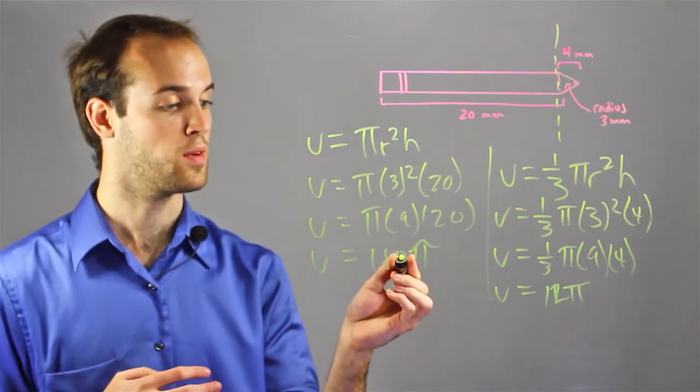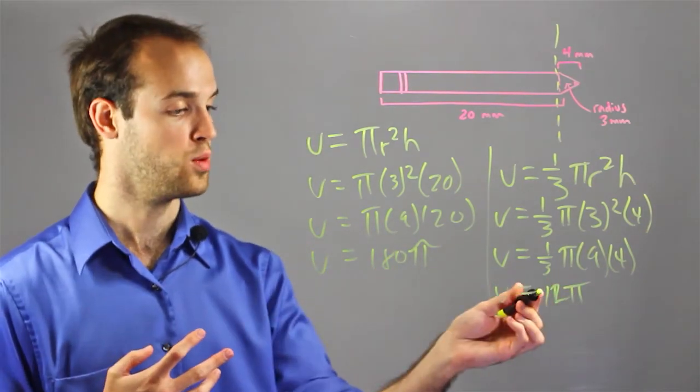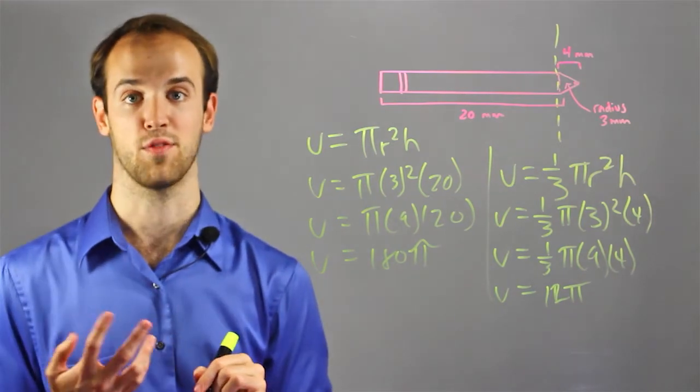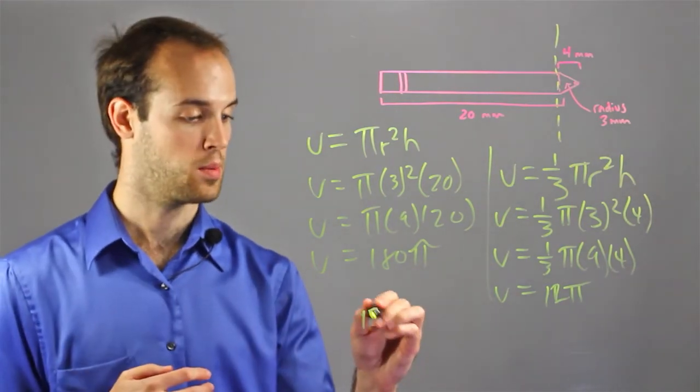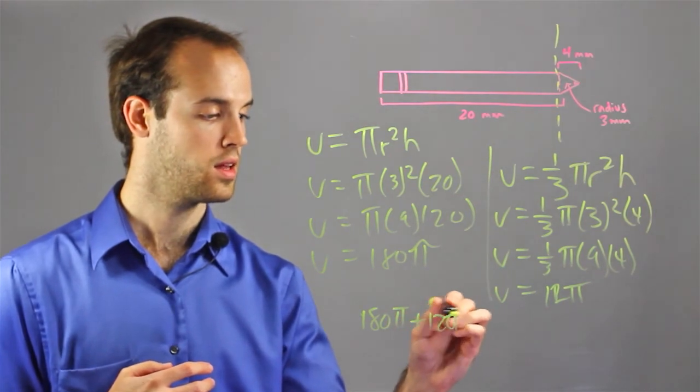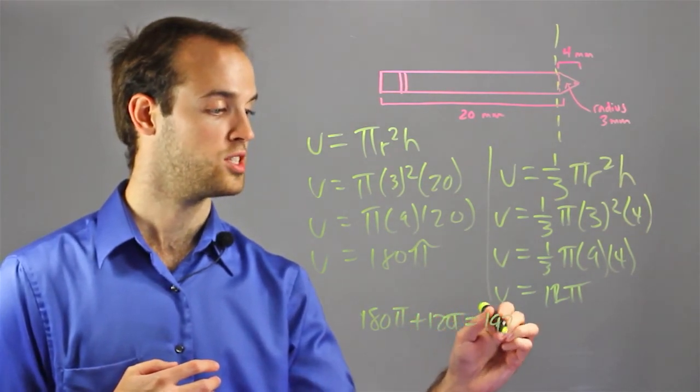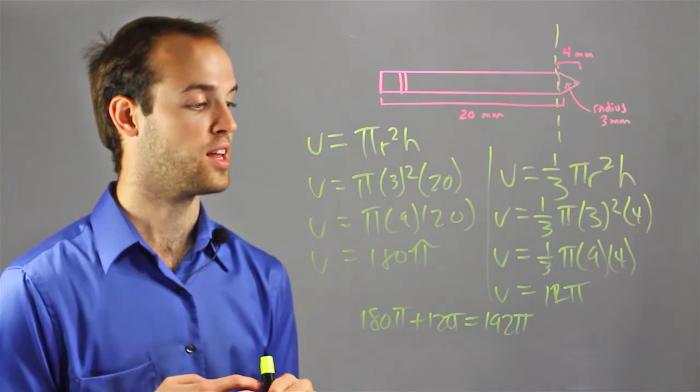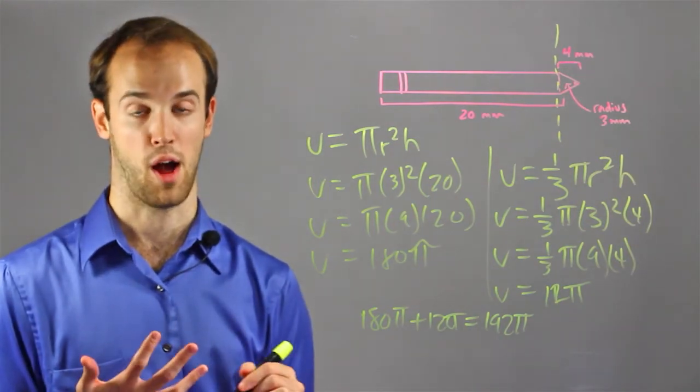So, now that I know the volume of the cylinder and the volume of the cone, I can add them together to get the volume of the pencil. Which is going to be 180π + 12π, which equals 192π. And now, I'll plug in 3.14 for π to get an approximate value.